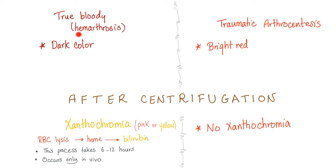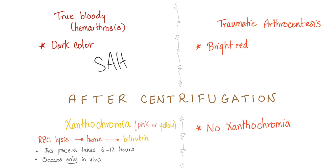Since medicine is well-connected and integrated, let's have a neurology integration. We can apply the same concept of xanthochromia. Let's say you have a cocaine-addicted hypertensive female patient complaining of the worst headache of her entire life, projectile vomiting, confusion, some fever and seizures. You rightfully suspect subarachnoid hemorrhage. You order a CT scan of the head without contrast to detect blood, but the CT scan came back negative for bleeding. What should you do next? You should do a lumbar puncture and look for xanthochromia.